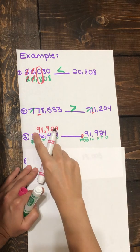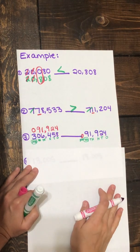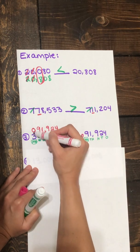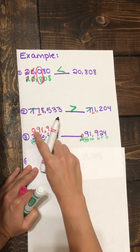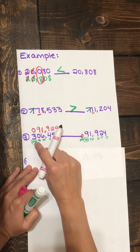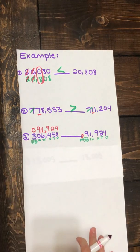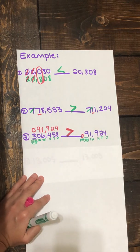So you can see, since we don't have anything here, we can fill this place with a zero. So now, as we go to compare, we can quickly see zero is less than three. So we have zero in the hundred thousands place, or 300,000. And we know that 300,000 is greater. So we put the greater than symbol.